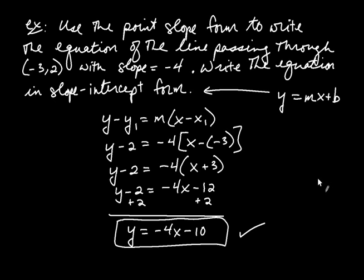So we actually have three forms of equations of lines: slope-intercept form, point-slope form, and there's yet another form called standard form, which we'll talk about in another video. Until next time.